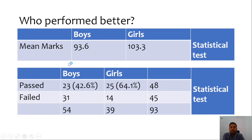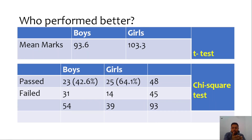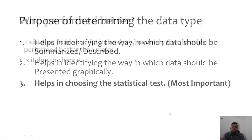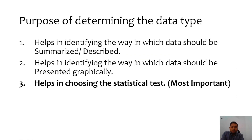If the data type involves a mean — meaning numerical or quantitative data — and the data distribution is normal, the statistical test to use is the t-test. The choice of test for comparing proportions is the chi-square test. So the bottom line is: one of the major determinants in deciding which statistical test to apply is the type of data, and this is one of the most important reasons for determining the data type.